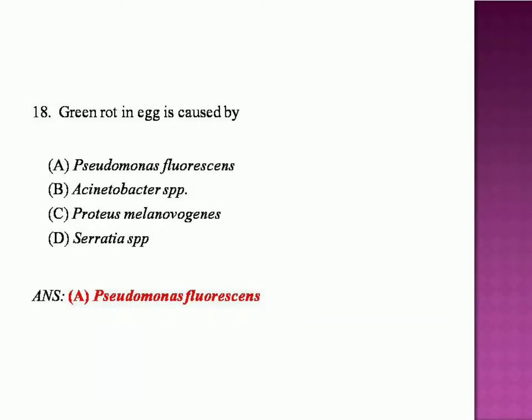Green rot in egg is caused by: Pseudomonas fluorescens, Acinetobacter species, Proteus melanogenes, or Serratia species? The answer is Pseudomonas fluorescens.